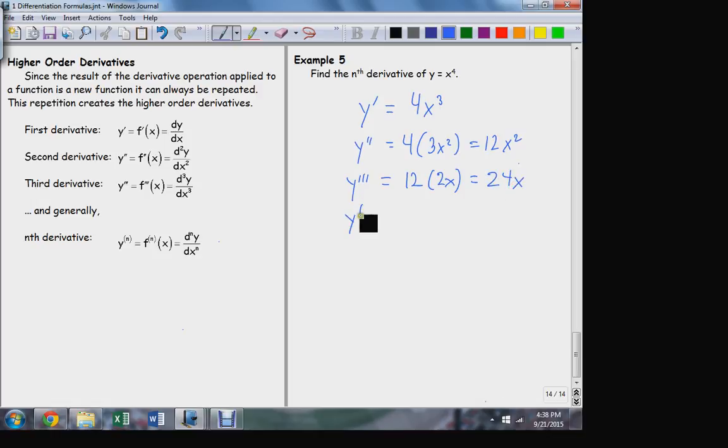What's the fourth derivative? 24. The derivative of x itself is just 1. What's the fifth derivative? 0. What's the sixth derivative? 0. And from on and on, forever and ever. Y to the sixth, y to the seventh, and forever and ever now, every other derivative will be 0.